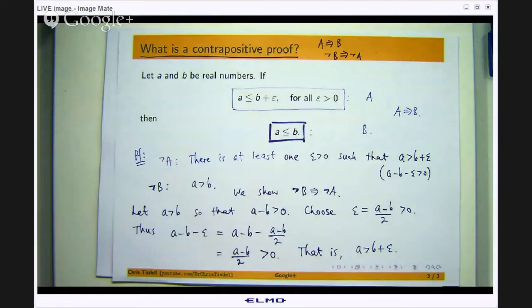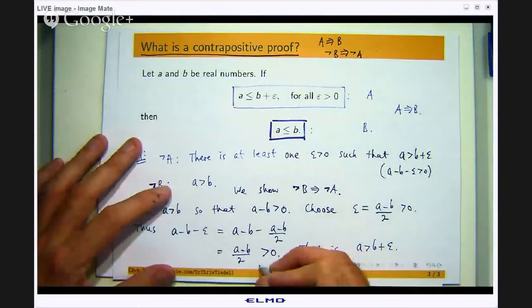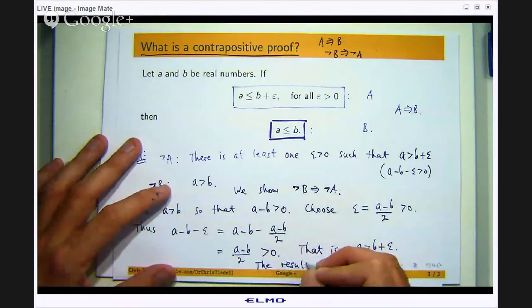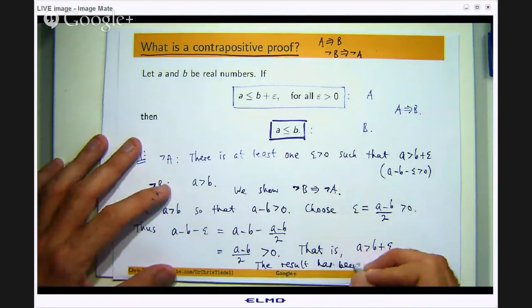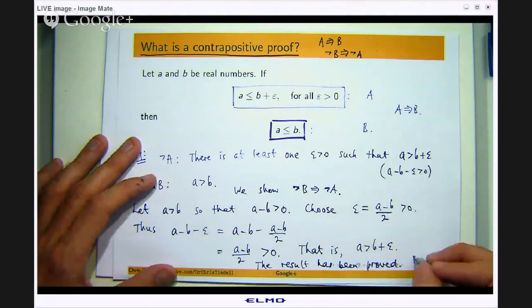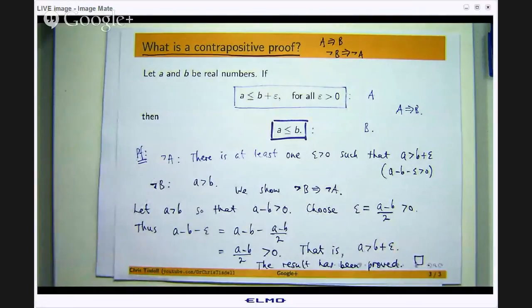So actually that is all the contrapositive proof is. Okay so that is pretty simple. The proof basically for an if-then type theorem was basically switched around. Instead of proving a implies b directly, what you do is you prove the negation of b implies the negation of a, not b implies not a. And you can use the fact that a implies b is logically equivalent to not b implies not a.